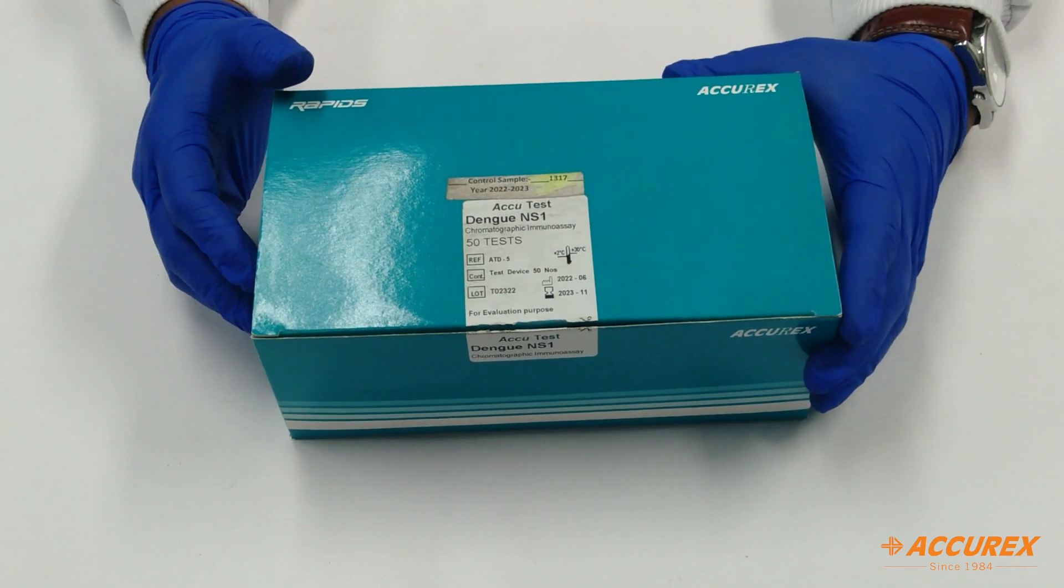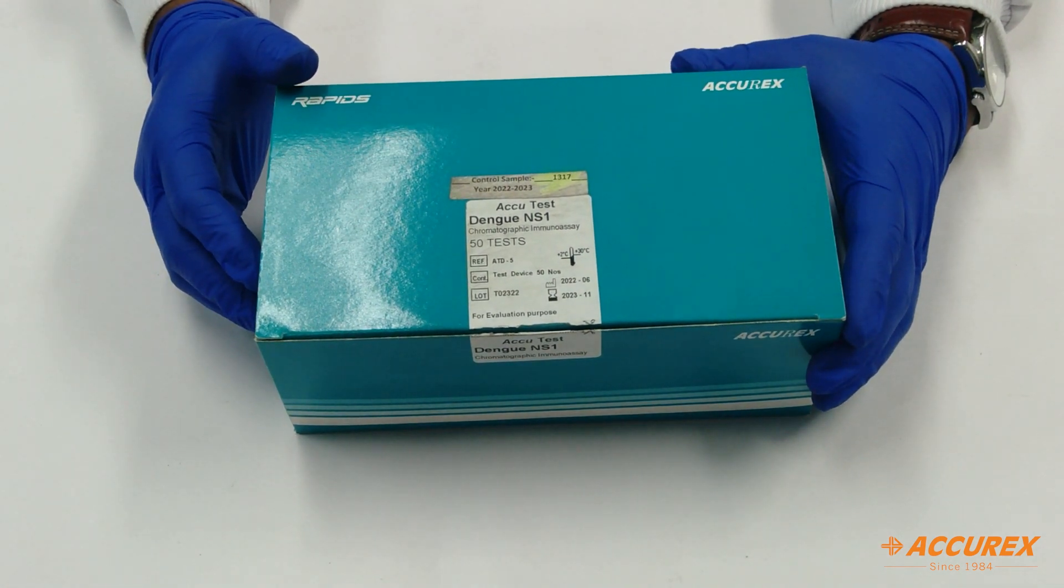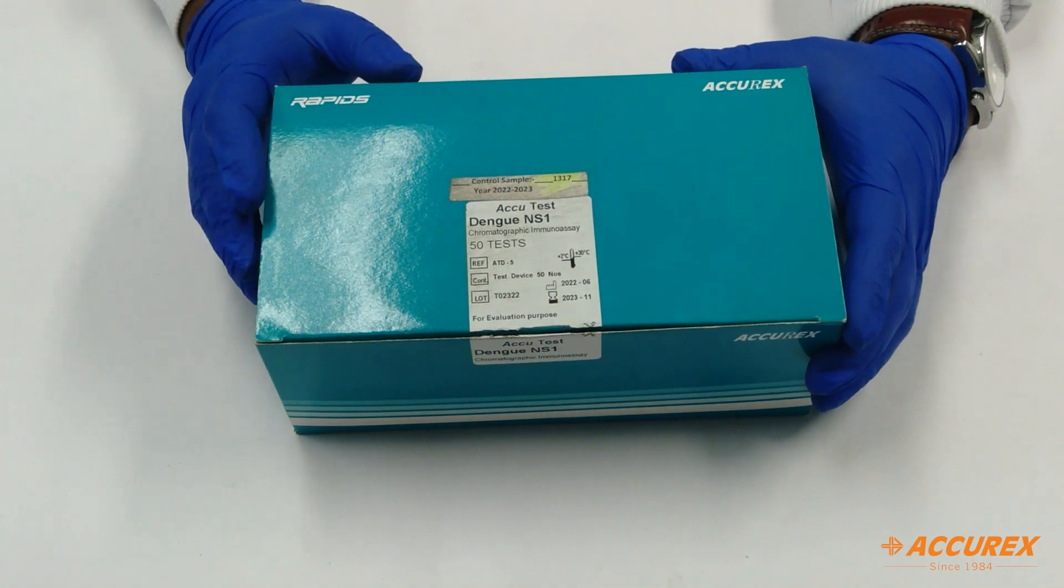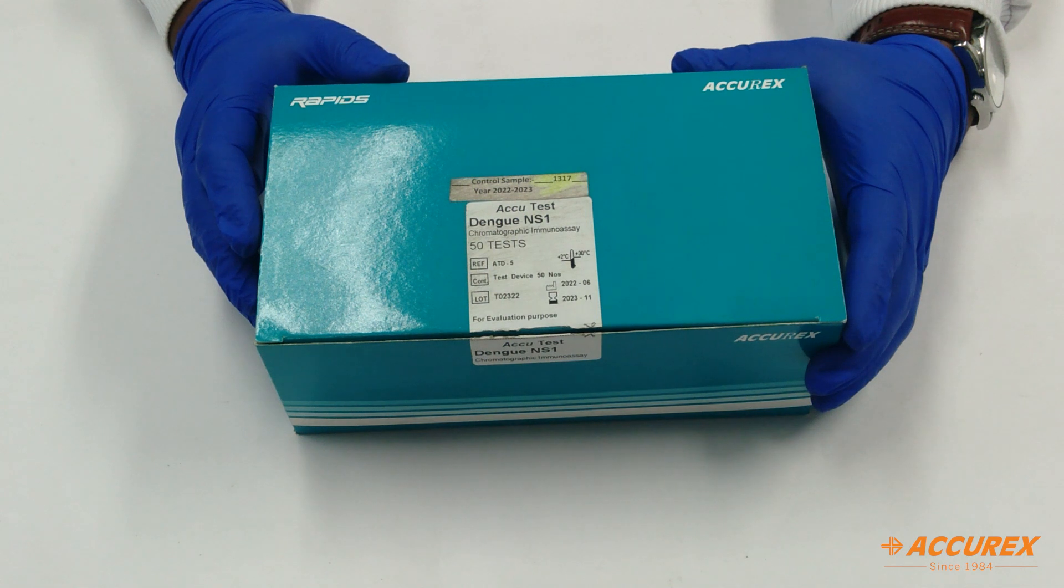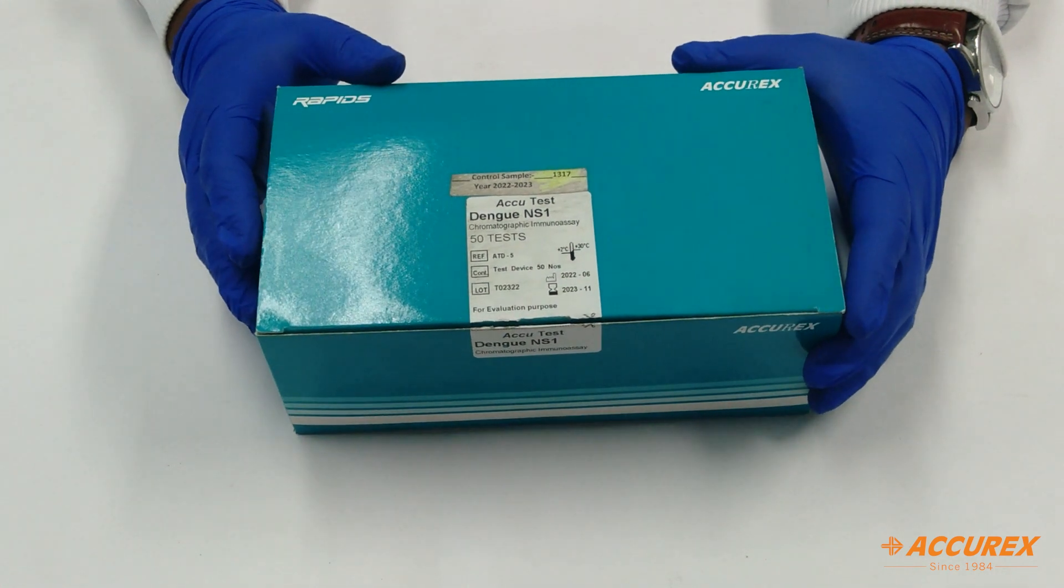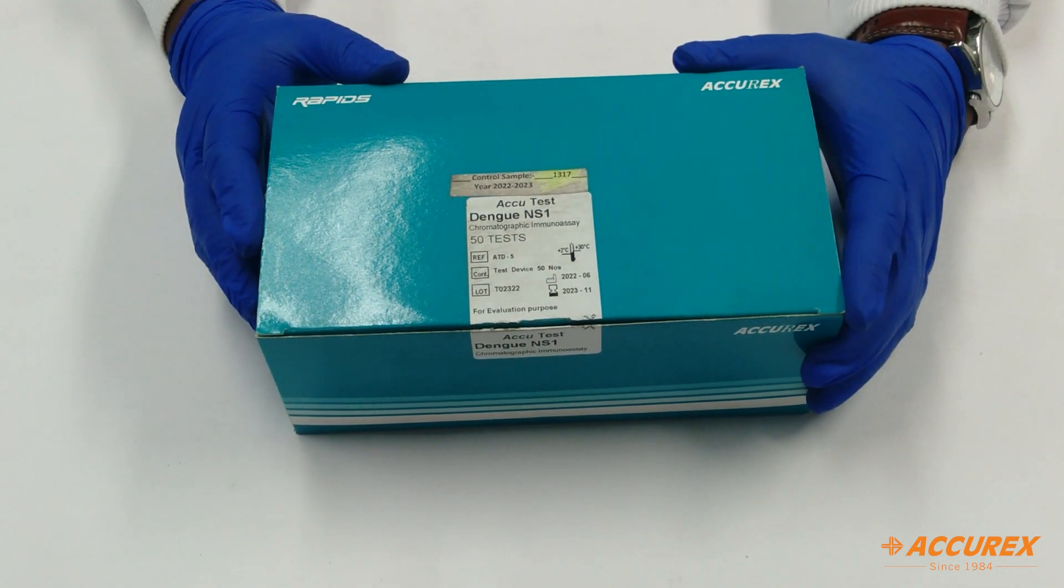Hello everyone, welcome to Accurex YouTube channel. Today we have brought the product called Dengue NS1. It is a rapid card kit using immunochromatic technology for the quantitative detection of dengue NS1 antigen in human serum or plasma. Before proceeding to the testing part, we will see what components come inside this kit and the handling and precautions needed.